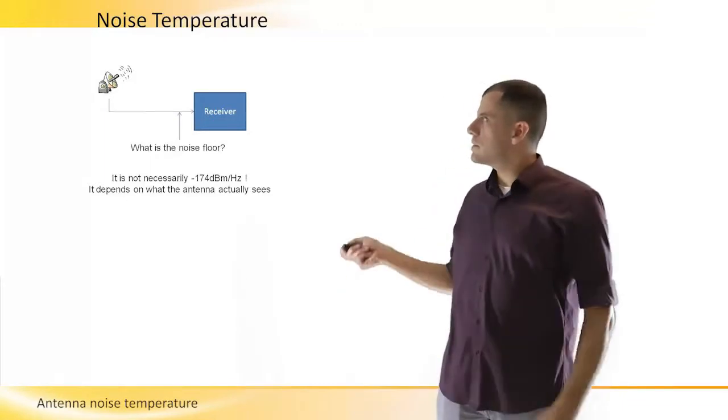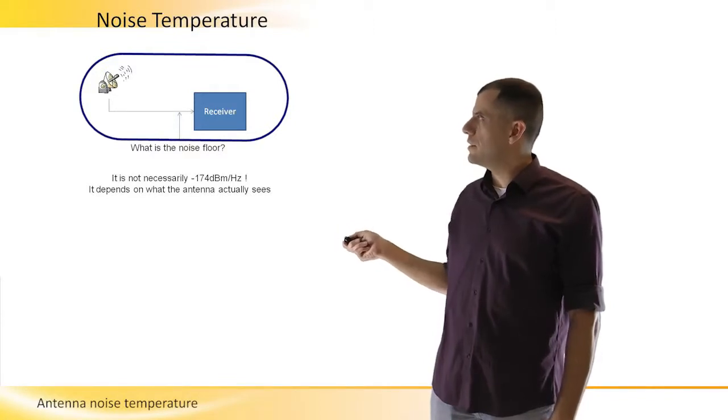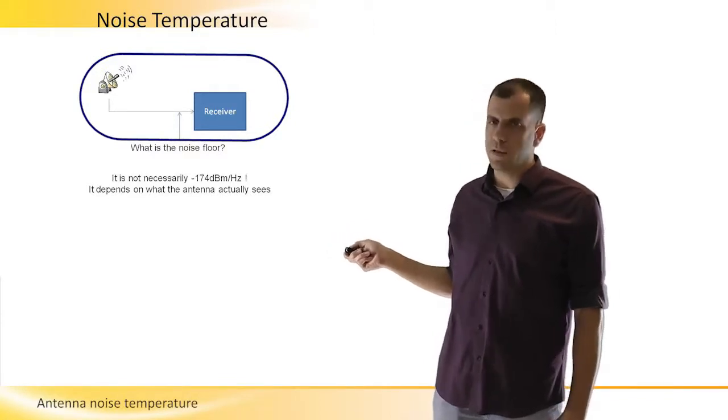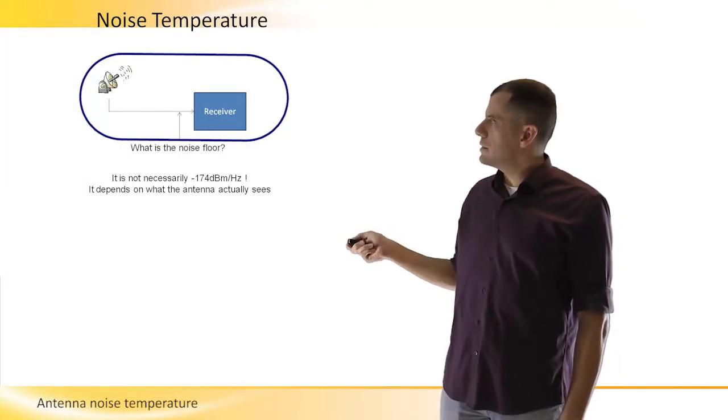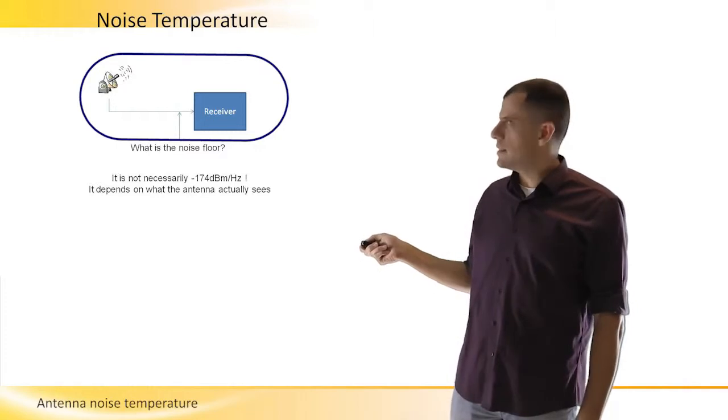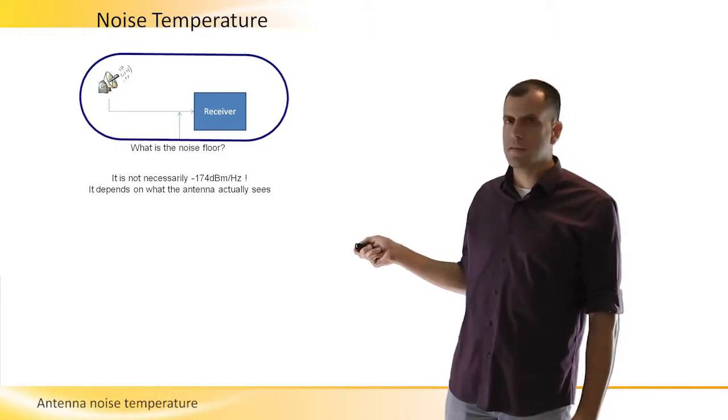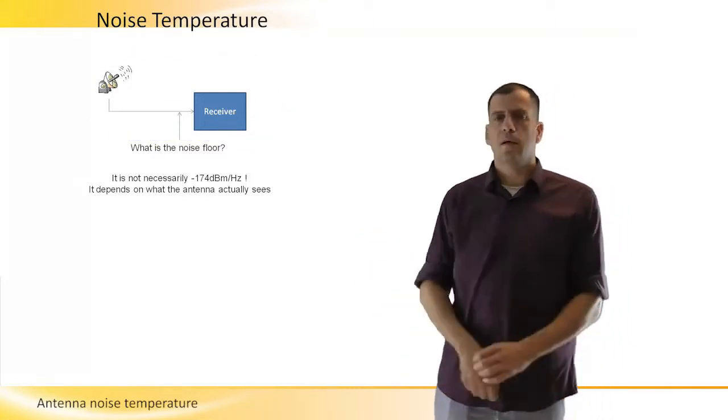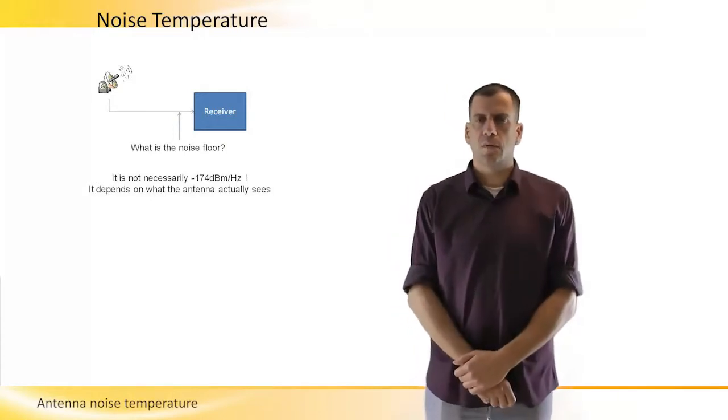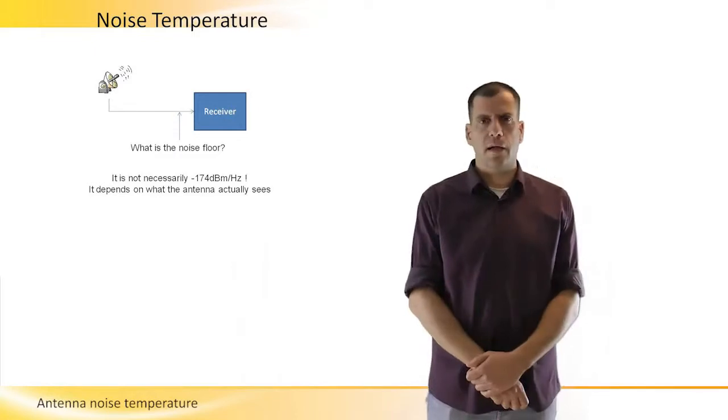And if you look on this basic scheme of any system that is connected to an antenna, we have an antenna and a receiver. We are now talking about receiving, and we assume as radio frequency designers that the noise in the terminals of our receiver is minus 170 dBm per hertz. But actually, when we are dealing with satellite communication, this is not actually right.